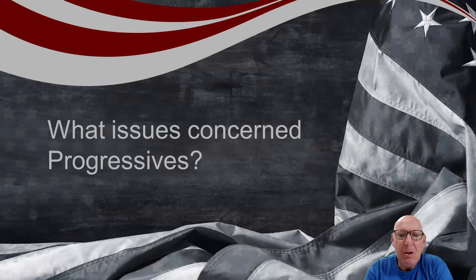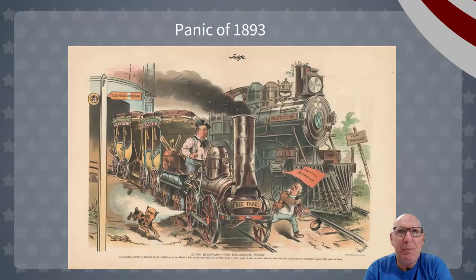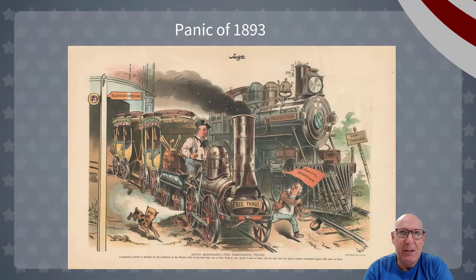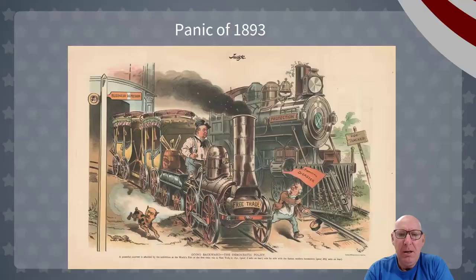The question asks: what issues concerned the progressives? Before that, be mindful that there was a populist movement before this time. The populists, essentially with the Omaha Platform, were frustrated that there wasn't enough money available. Since money was tied to how much gold we had, William Jennings Bryan argued for taking silver at a ratio of 16 to 1 in order to print money and meet the fluidity of coin necessary.